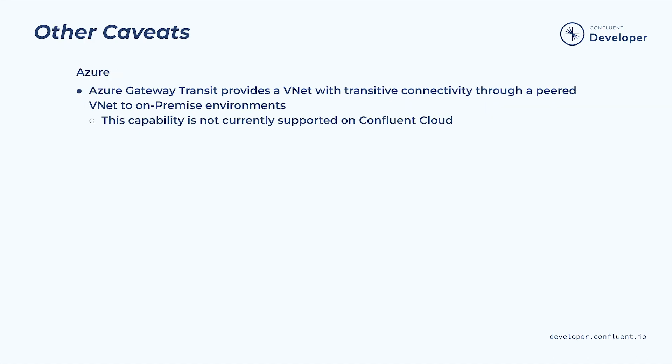To enable this feature, select it when creating the peering connection in Confluent Cloud. This option does not work to provide transitive connectivity to Confluent Cloud from one GCP VPC through another Google Cloud VPC. In Azure, Azure provides a capability called Gateway Transit. This allows a VNet to access a VPN or ExpressRoute gateway in a peered VNet. For example, if VNetX is peered to VNetY, and VNetY has an ExpressRoute connected to my data center, Gateway Transit allows VNetX to access the data center through the ExpressRoute in VNetY. This capability is not currently supported in Confluent Cloud. Thanks for joining us — we'll see you in the next module.